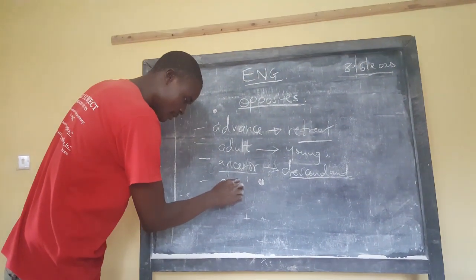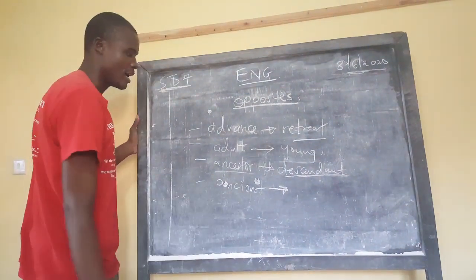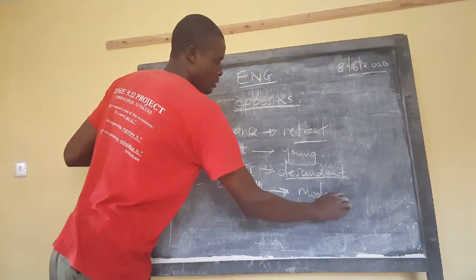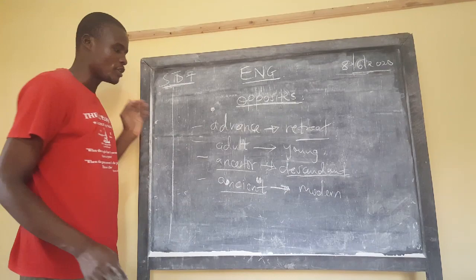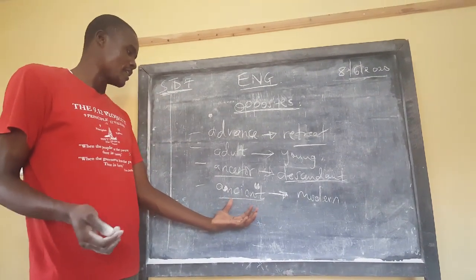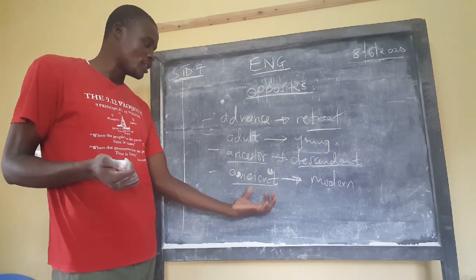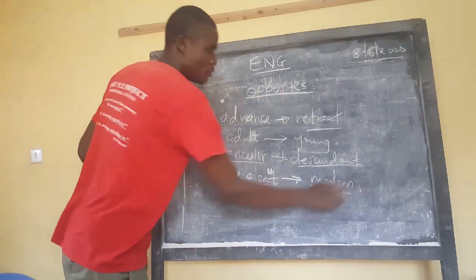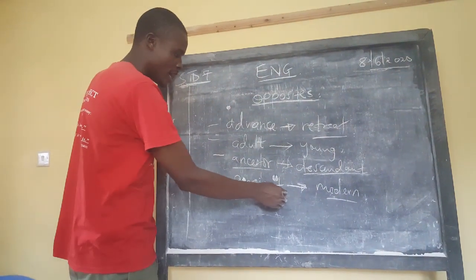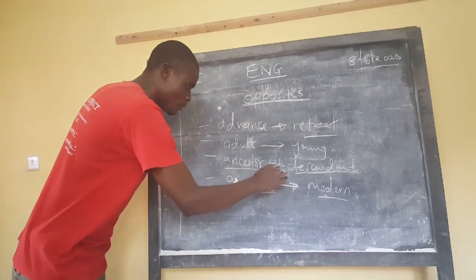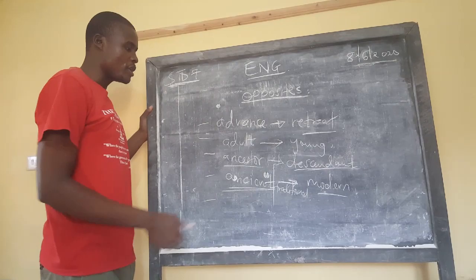Then we have the word 'ancient', which is commonly tested in examinations. Ancient is the opposite of 'modern'. Ancient means long time ago. For example, the first church built in Kenya long ago was an ancient church, while churches built today are said to be modern. Even the modern buses and trains — the ones that were there before, that our grandfathers used, were called ancient or traditional.